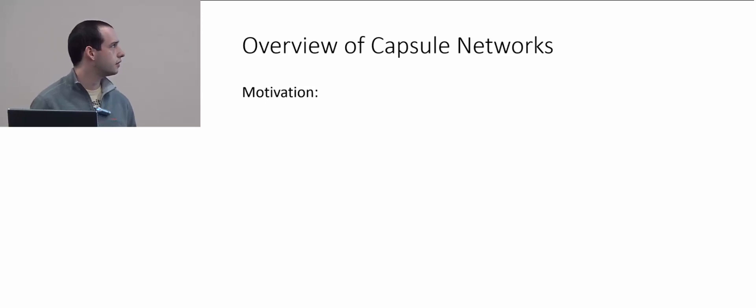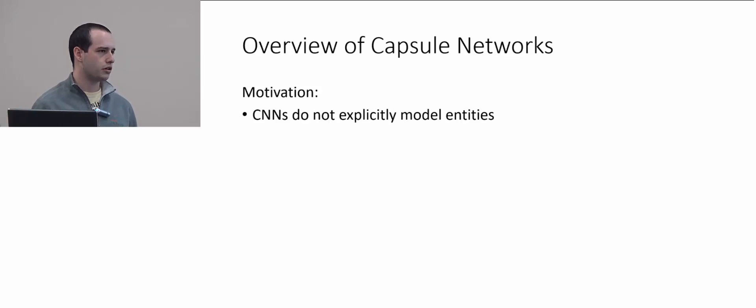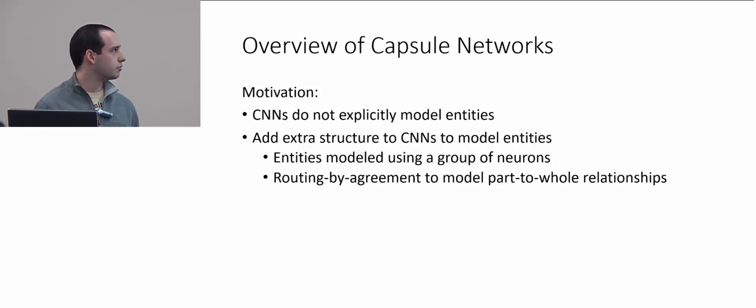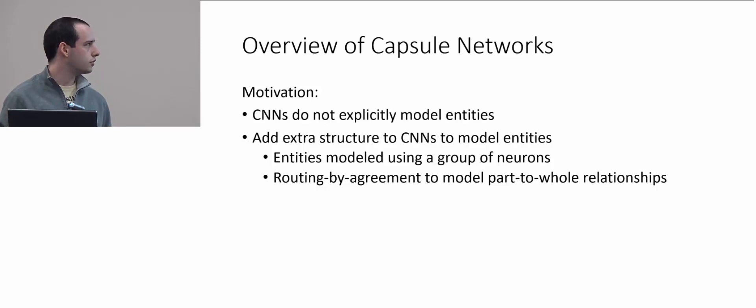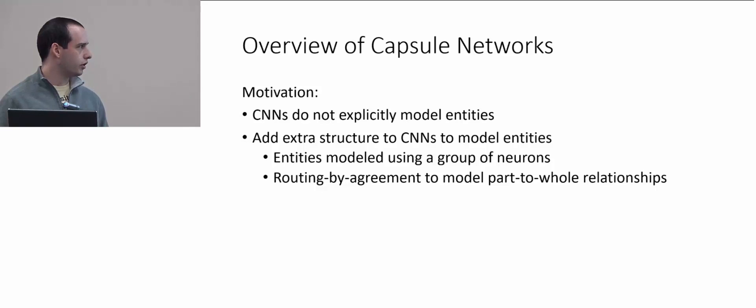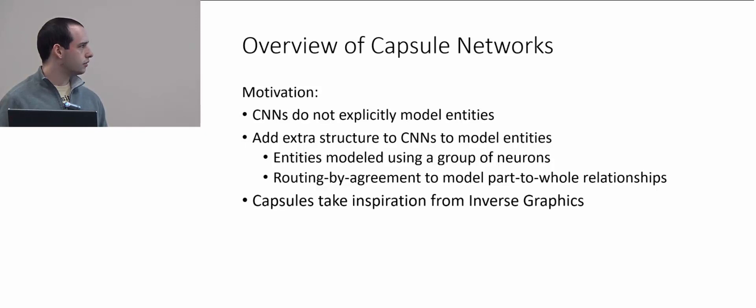For capsule networks, the idea is that conventional convolutional neural networks don't really explicitly model entities within an image or video. Capsule networks add extra structure to CNNs to model these entities. This is done in two parts: capsule networks group neurons together, so instead of single activations in regular CNNs, we have groups of neurons describing different entities or features, and these groups are routed by agreement to model part-to-whole relationships.